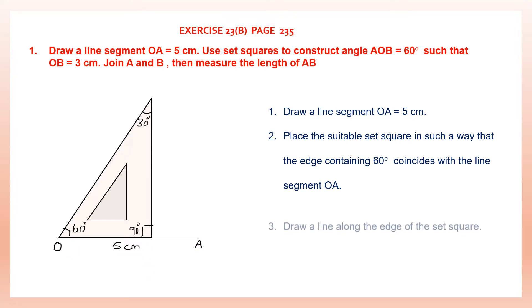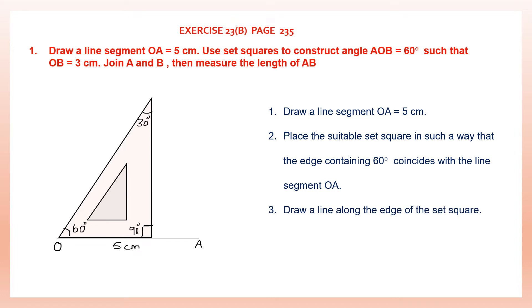Now draw a line along the edge of the set square. We're going to draw a line along this edge of the set square. So we have drawn a line along that and marked 60 degrees. We already have 60 degrees here, so we've finished the first part: constructing angle AOB of 60 degrees. Now let's remove the set squares since we already have the line drawn.